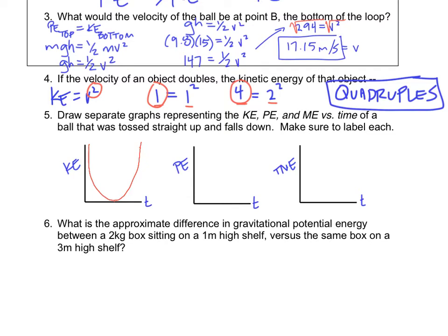Kinetic energy and potential energy are inversely related, so the PE graph is flipped compared to KE. At the lowest point PE is minimum; as the ball goes up, PE increases to its maximum at the highest point, then decreases again — an inverted U-shape. For total mechanical energy, the trade-off between KE and PE means total mechanical energy remains constant — a flat horizontal line at the maximum.